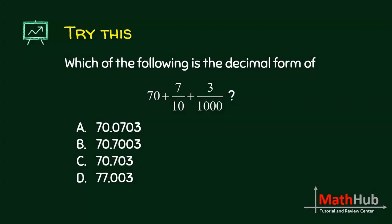Which of the following is the decimal form of this? This is actually 70 plus 7 over 10, which is 0.7, plus 3 over 1,000. You just have to move the decimal places 3 places to the left because you have 3 zeros here. So that's 70.703, letter C.